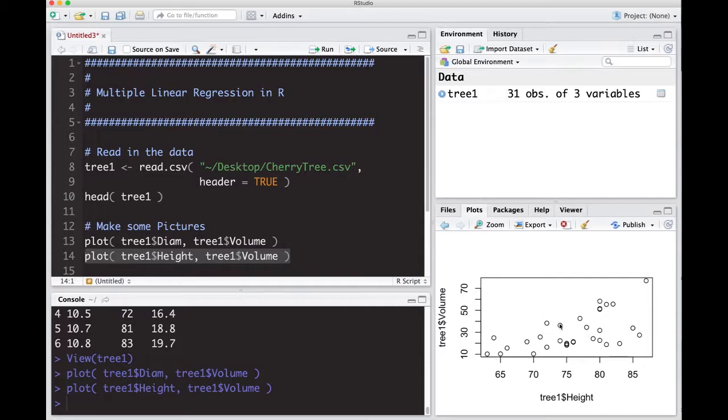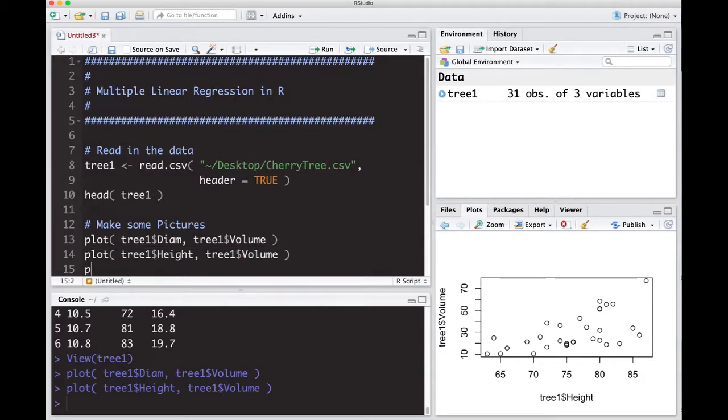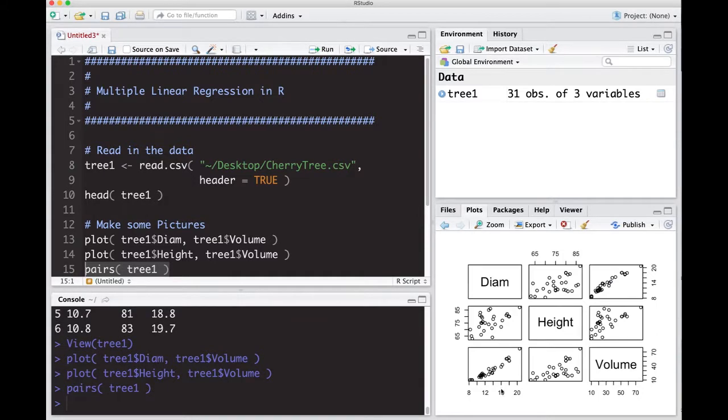Let's keep going here. One of the things we could do is the pairs plot, and this will do the plots that we did above all at once. So we get diameter, height, volume and you can see the relationship between them. They look pretty good. We have a really strong relationship and then we have a somewhat strong relationship.